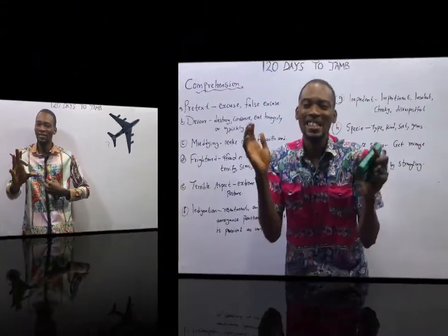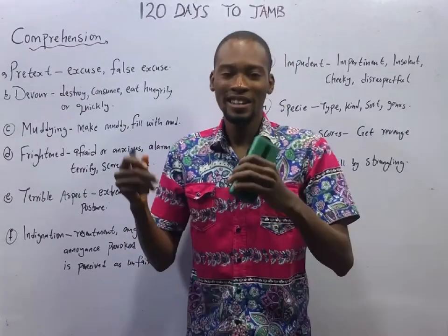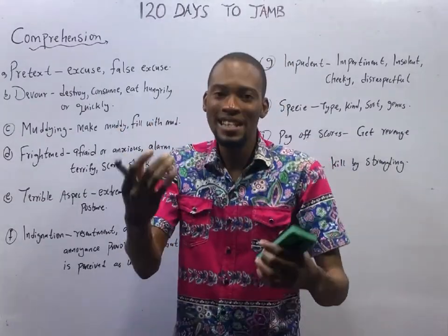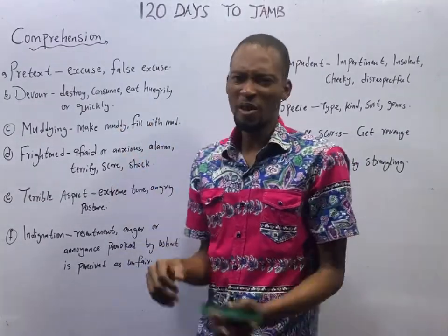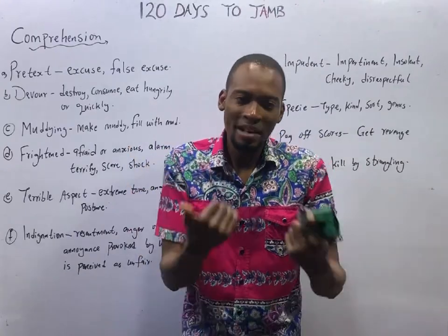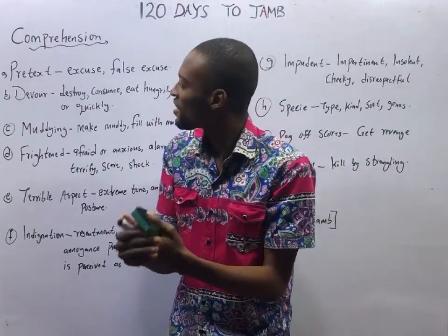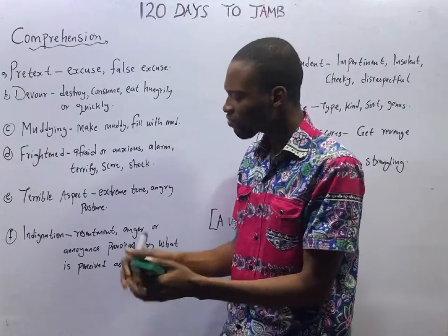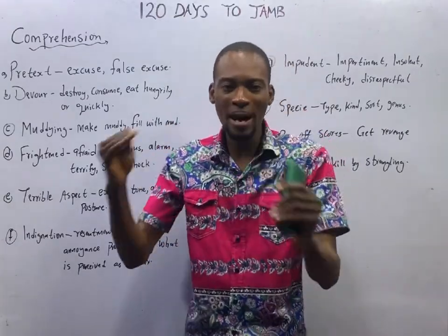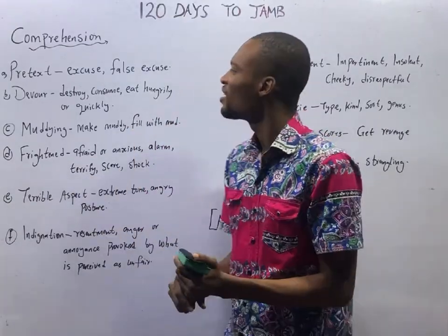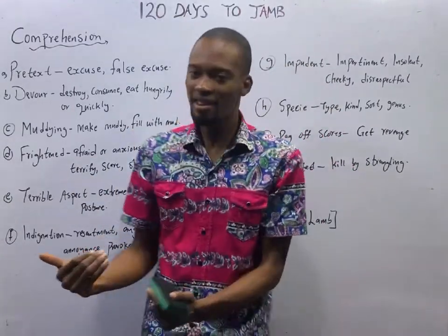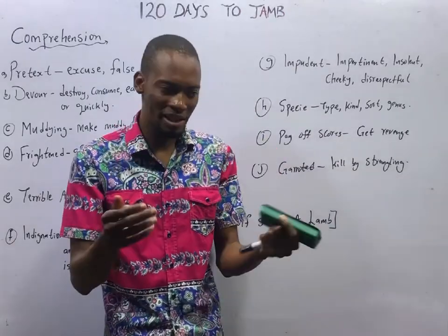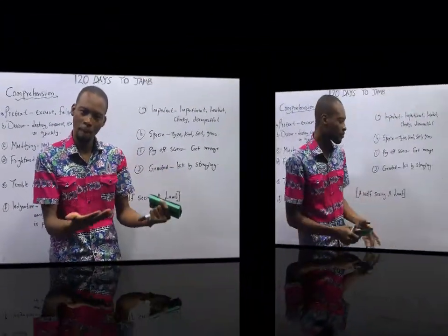Ladies and gentlemen, it is time to take off. This is Episode 7 of the 120 Days to Jump Use of English with Flash Isaac. I am excited about this episode because it is our first comprehension passage of the series, and you are really going to enjoy this episode in particular.